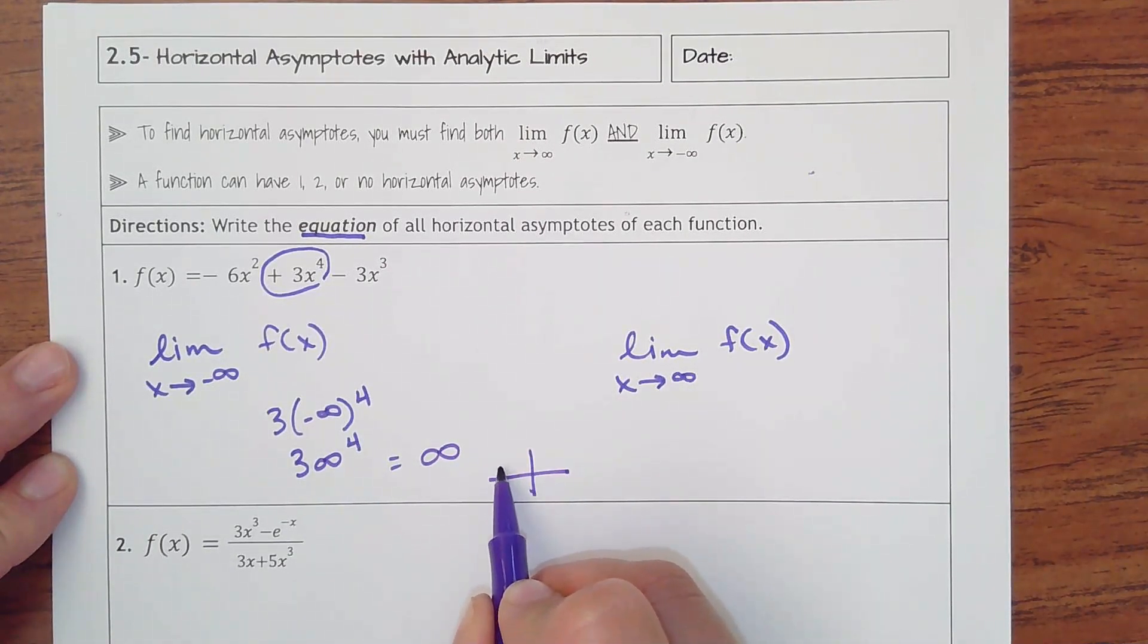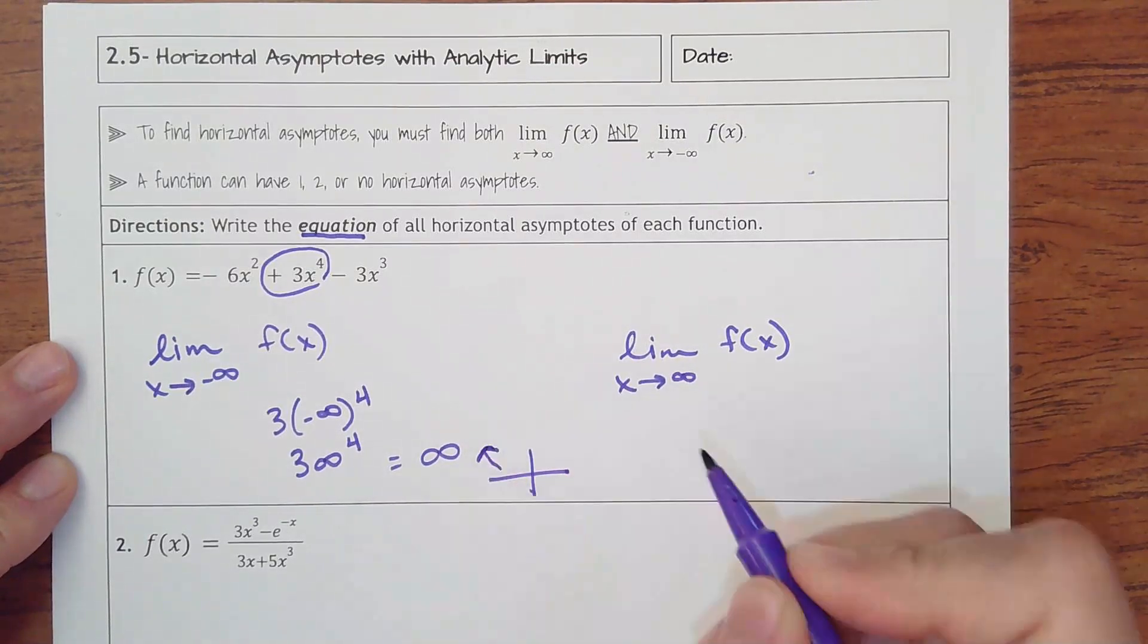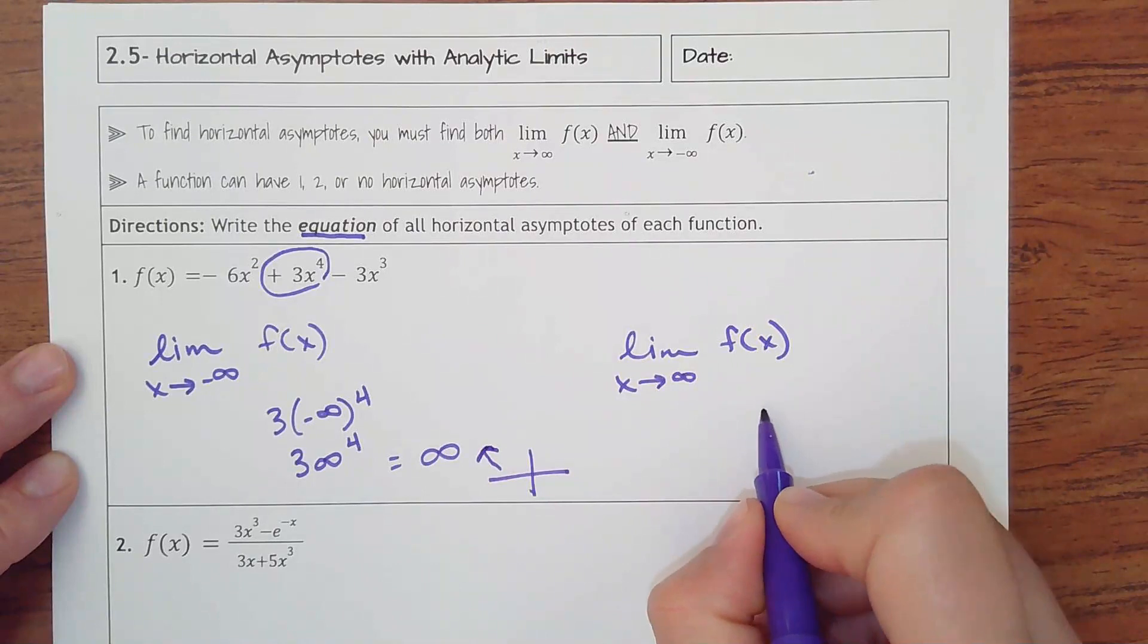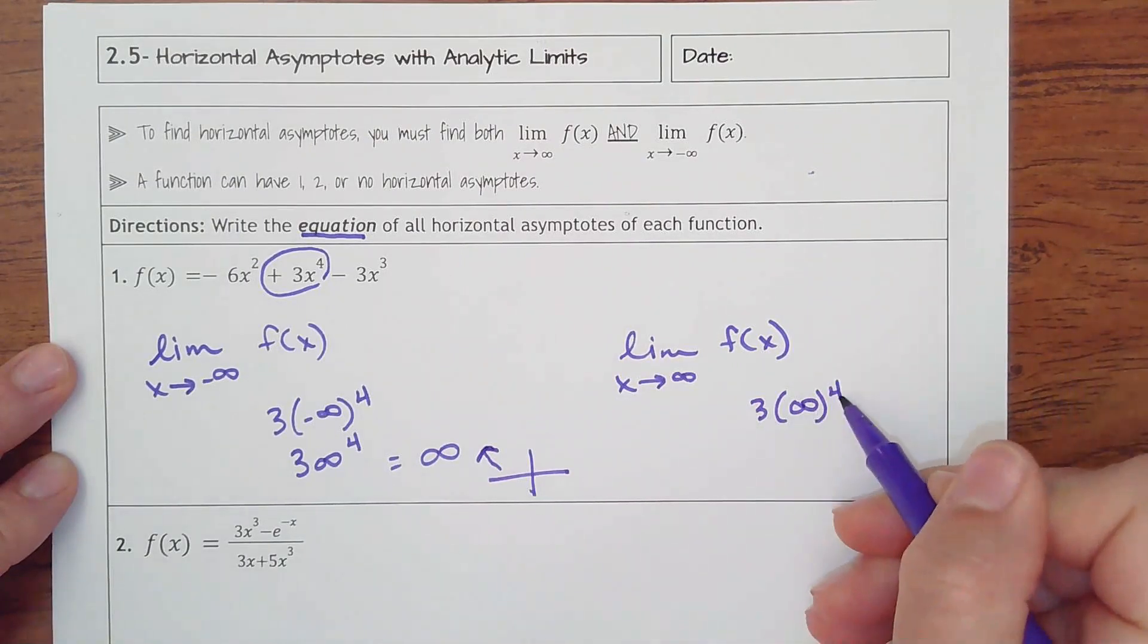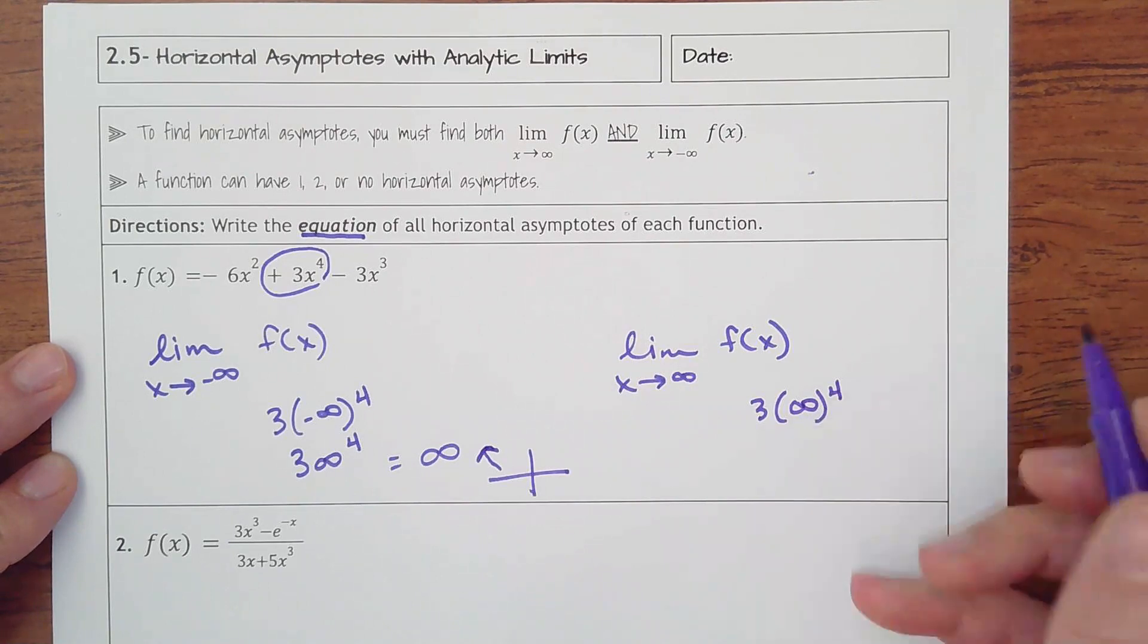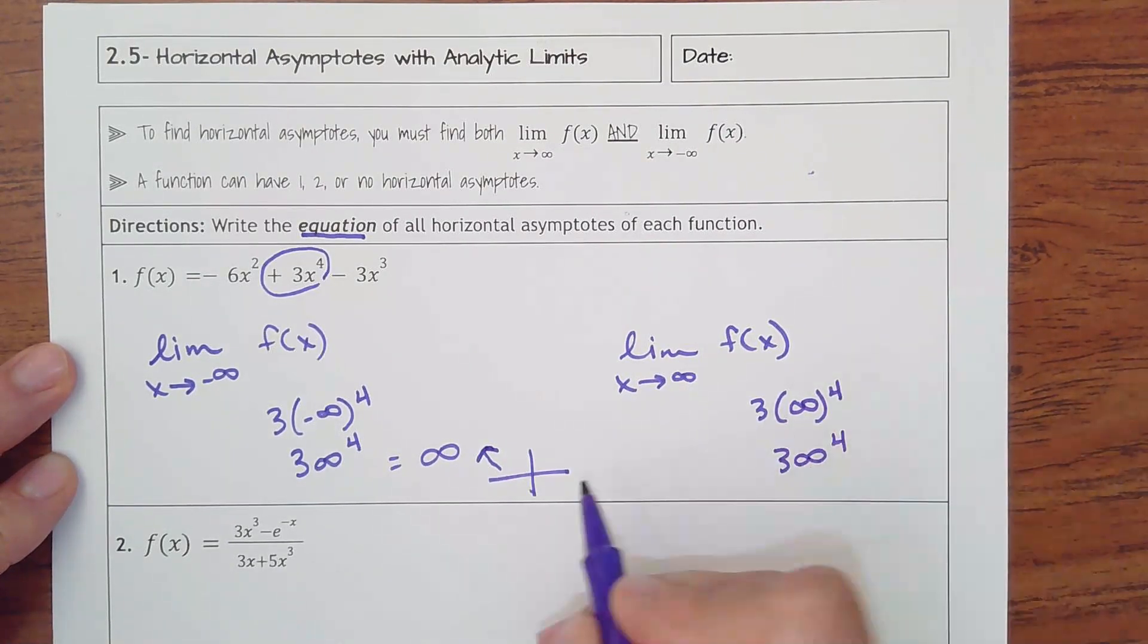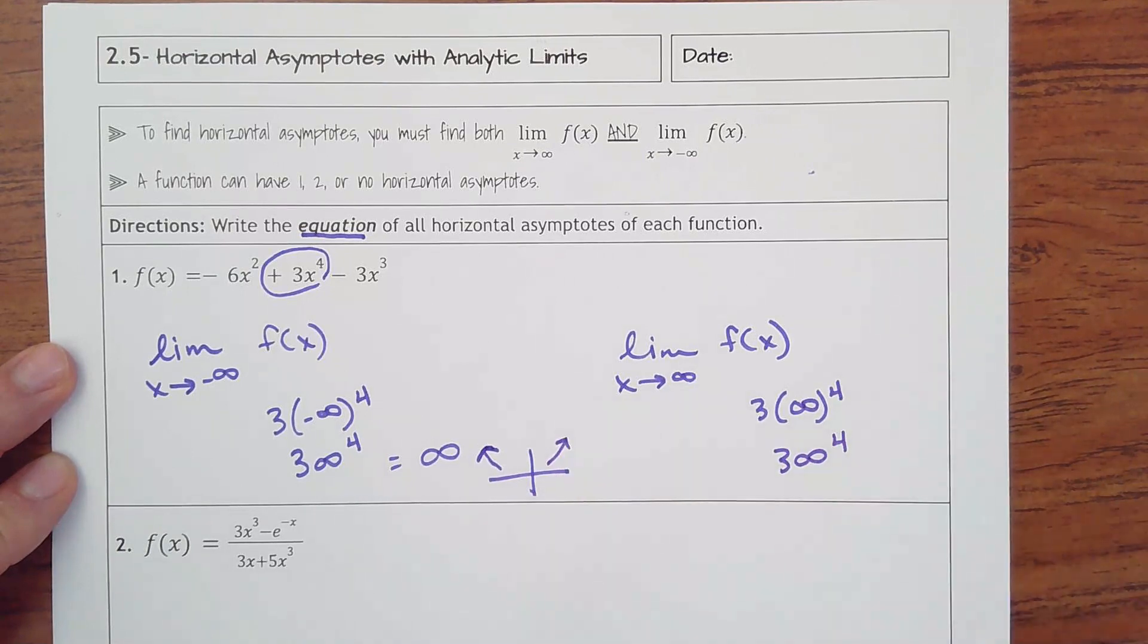So that is not going to get me an asymptote. That means that as x goes to the left, y is going up. On the right side, do same thing where I'm going to plug in my 3 times infinity to the fourth. That is going to be positive and positive. So a number to the fourth times 3 is still going to go up.